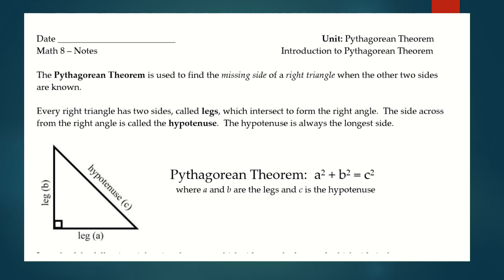The discovery was: when a triangle has a right angle of 90 degrees, and squares are made on each of the three sides of the triangle — almost like if you were to extend each side to create squares — then the biggest square has the exact same area as the other two squares put together.